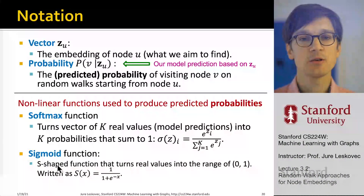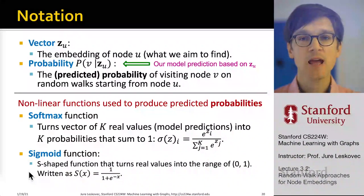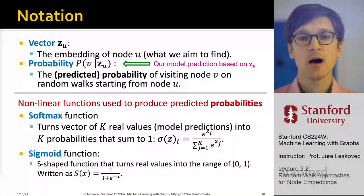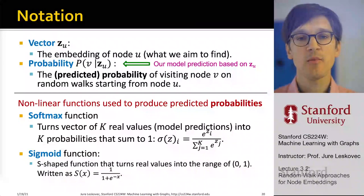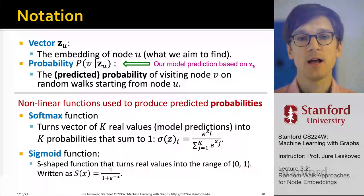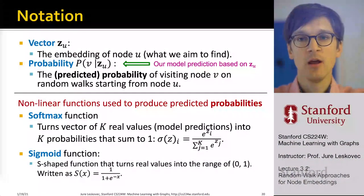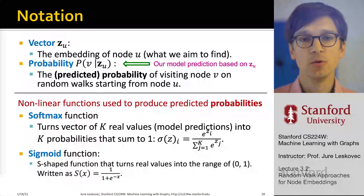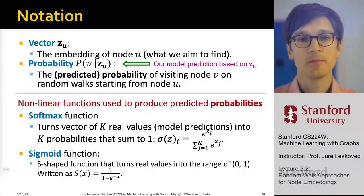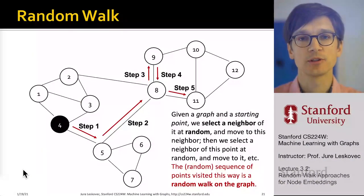We are also going to define the sigmoid, which is an s-shaped function that turns real values into a range of 0 to 1. Sigmoid is defined as 1 over 1 plus e to the minus x. This is a nice way to take something that lives on minus infinity to plus infinity and squish it to a value between 0 and 1. Those are two important functions we will use.